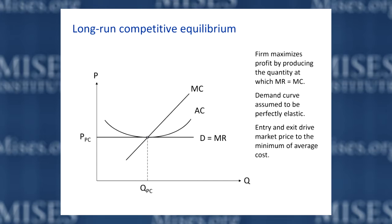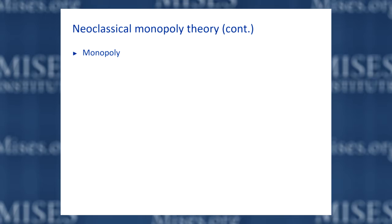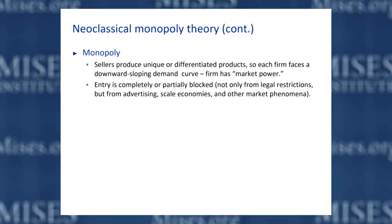If that's competition, what about monopoly? What's the neoclassical theory of monopoly? Monopoly obtains when you have a market in which sellers produce unique or differentiated products, such that each firm faces a downward-sloping demand curve. To use the terminology neoclassical economists use, each firm has market power — referring to the ability to raise the price above the marginal cost. If the demand curve is downward sloping, the firm might have the opportunity, by selling less and reducing output, to ride up that demand curve and charge a higher price.